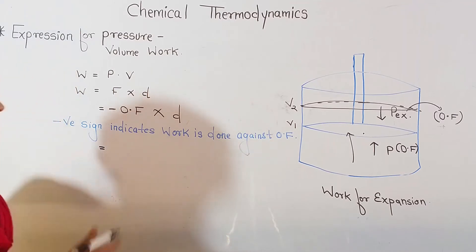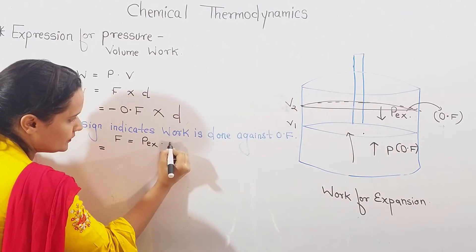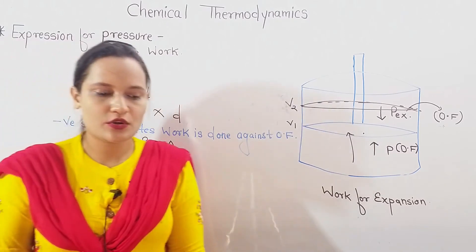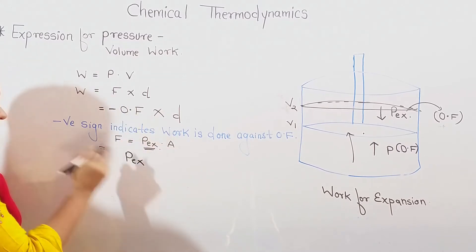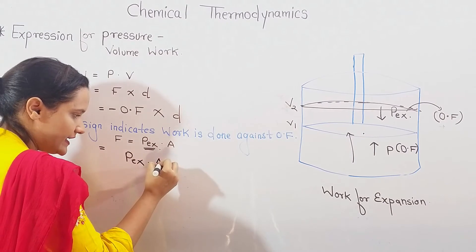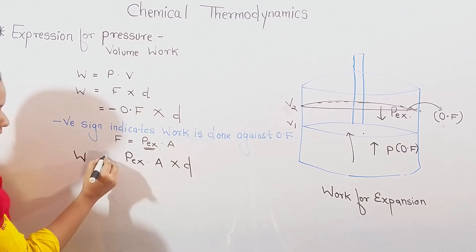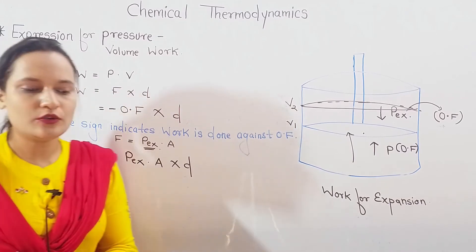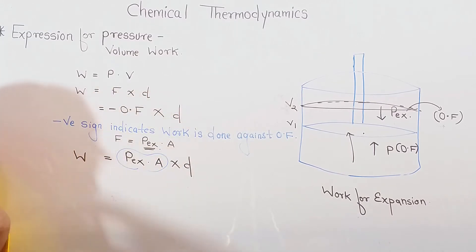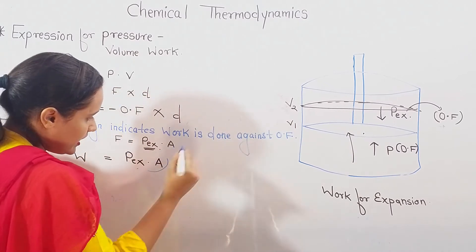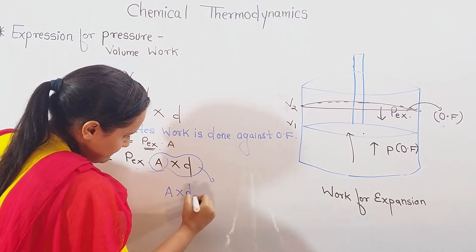So let us write down the formula. Force is equal to pressure into area. Here the pressure is the external pressure. So the opposing force equals external pressure into area. And with this force, you also have displacement. Area into displacement will give me volume.